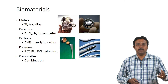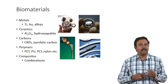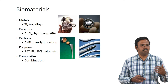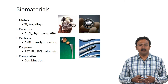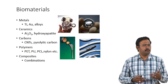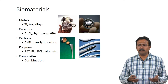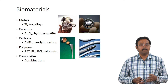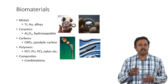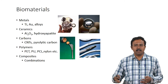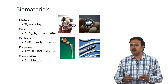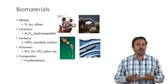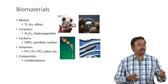The materials used can be classified primarily as four things: metals, ceramics, carbons, and polymers. Metals include titanium, gold, silver, and alloys. Ceramics include alumina, zirconia, and hydroxyapatite. Carbons include carbon nanotubes, pyrolytic carbons, graphene, and fullerenes. Polymers — there is a wide array including both synthetic polymers and natural polymers like chitosan and collagen. Composites are combinations of these materials, such as polymers with ceramics or carbons, to provide different functionality.